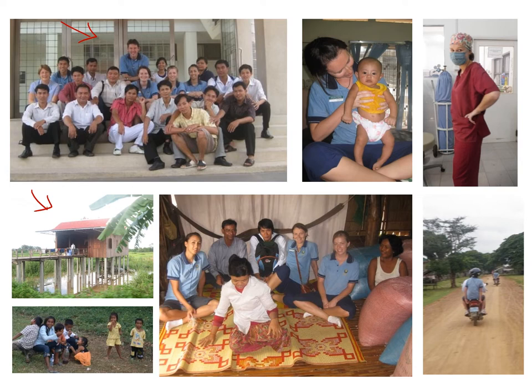A big part of the placement involved going around to local communities. A pretty standard house in one of the rural areas had a family with multiple generations - young children, parents, and grandparents - living inside. Large families with lots of kids obviously means lots of resources are needed. Travelling around was quite exciting - people generally travel by motorbike, with not very good road quality. That gives some background into what life is like in some of these communities.